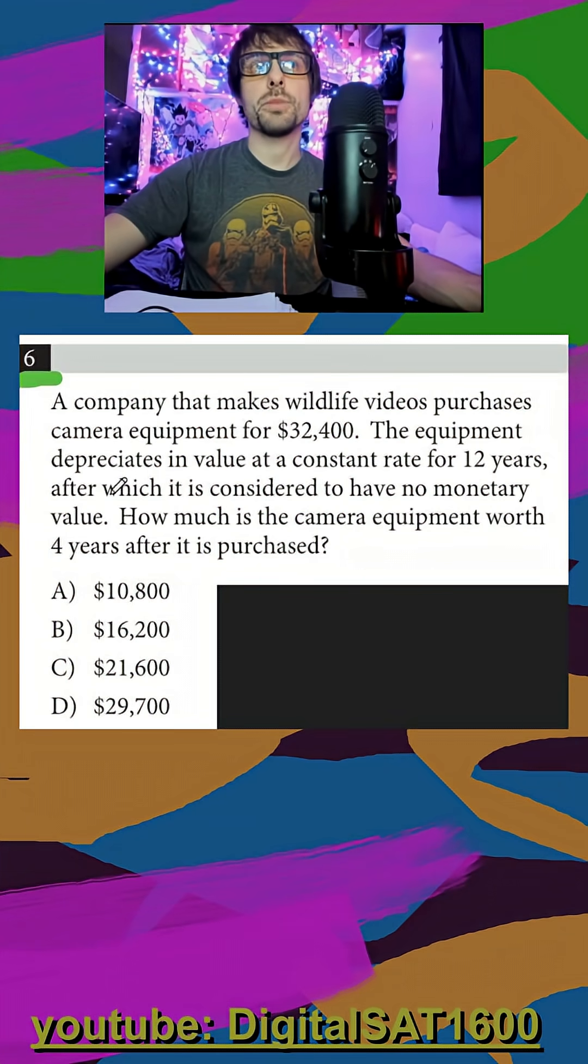A company that makes wildlife videos purchases camera equipment for $32,400. That sounds like a y-intercept, so I'm going to say when my x is 0, my y is $32,400.